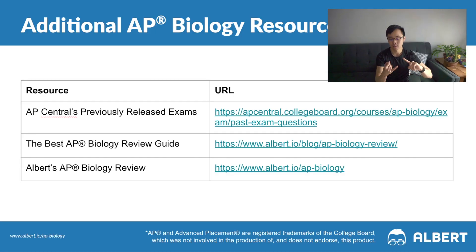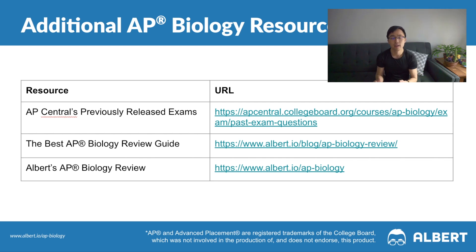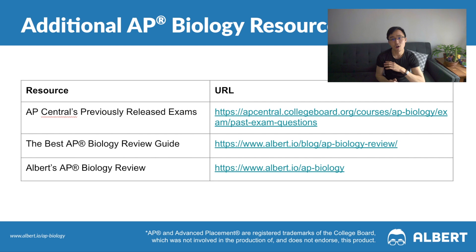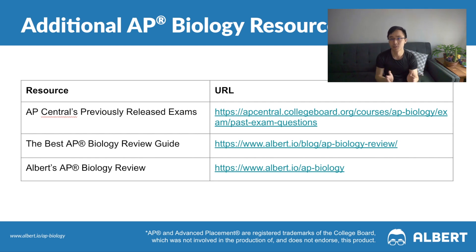Three additional resources to check out: First, AP Central, where you'll find all previously released AP Biology FRQs, scoring guidelines, chief reader reports, and exemplar student responses — super helpful for building familiarity with how rubrics are graded. Second, Albert's free AP Biology review guide on their blog, which gives you key questions to ask yourself to make sure you've mastered all the concepts covered on the exam. Third, AP Biology at Albert, featuring hundreds of full-length practice exams and practice questions with detailed explanations to reinforce understanding of key concepts.